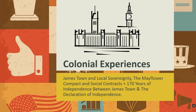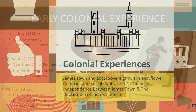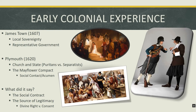We're going to begin with the first learning objective by talking about colonial experiences in the early historical periods of British settlement in North America. We're going to start with Jamestown and talk about local sovereignty, discuss the Mayflower Compact and the concept of a social contract. Let's get started by looking at the first permanent British settlement on the North American continent — that's Jamestown, founded in 1607.